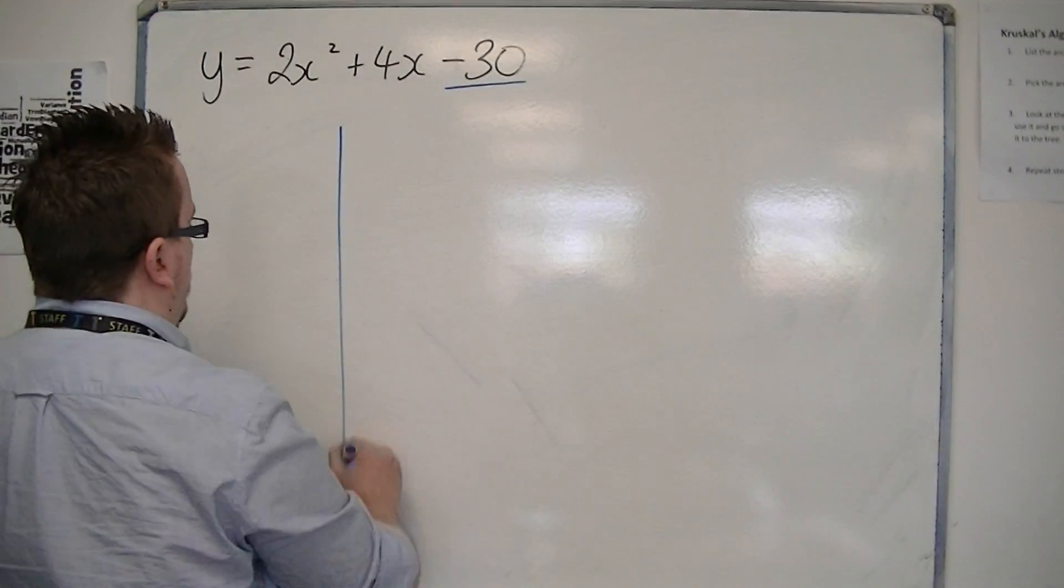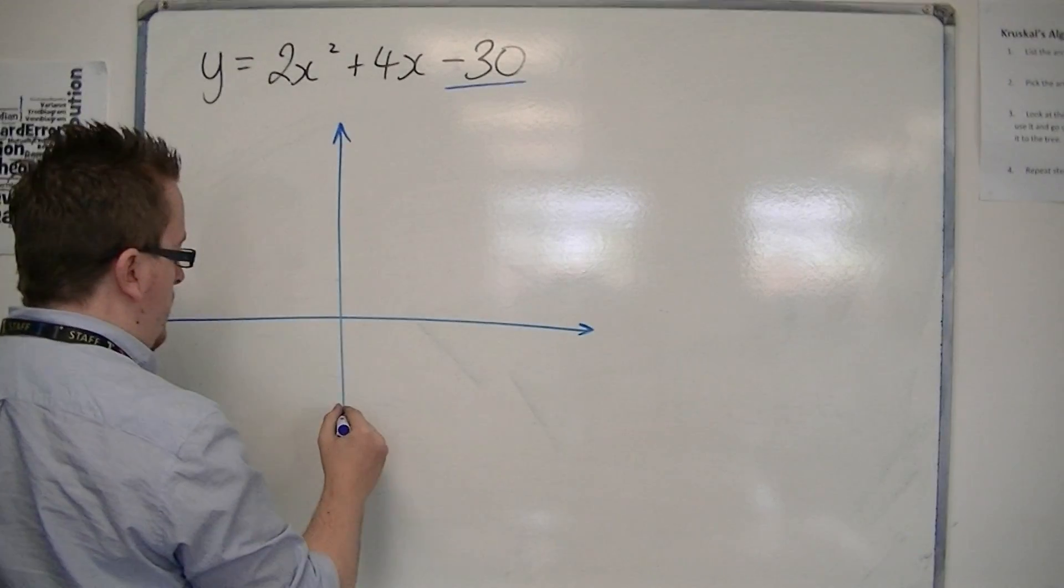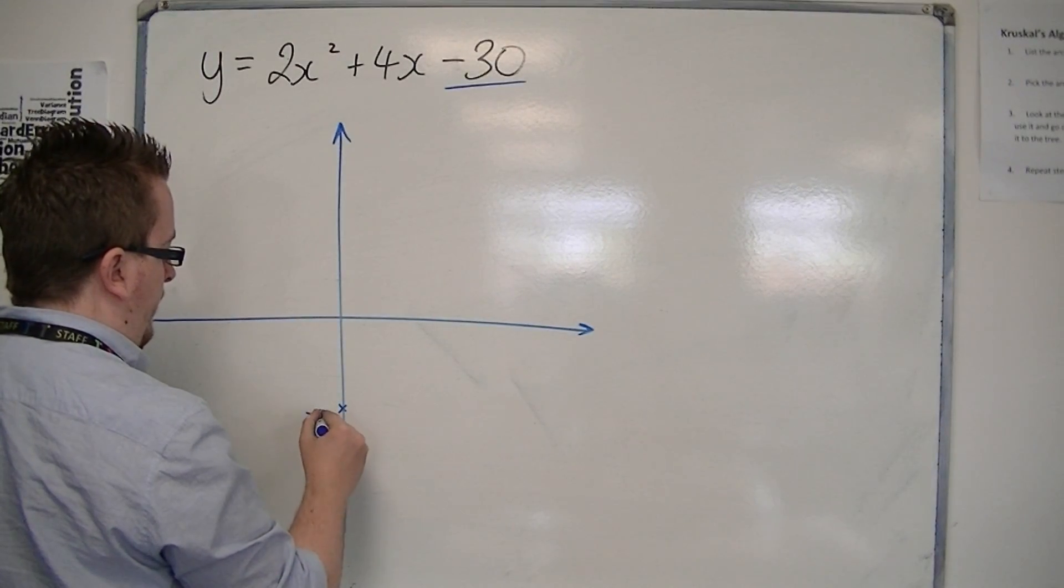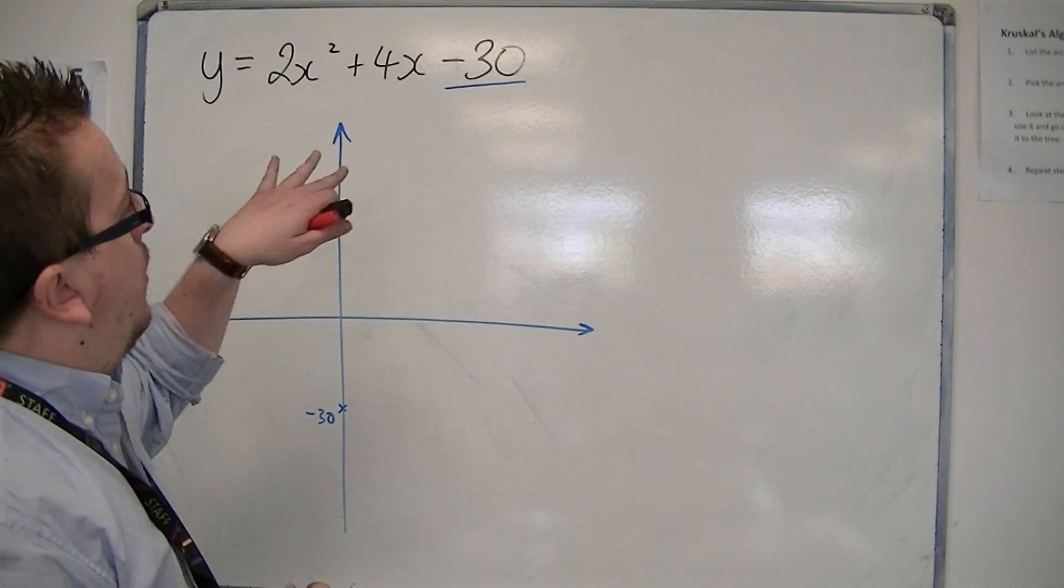So in building up this picture, I already know it crosses at minus 30. Now, what else?